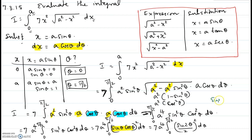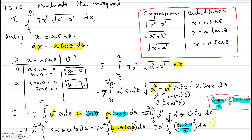Recall that sin(2θ) = 2 sin θ cos θ, so dividing both sides by 2 gives sin θ cos θ = sin(2θ)/2, which is what we are using here. This can be written as 7a⁴ times 1/4 times the integral from 0 to π/2 of sin²(2θ) dθ.